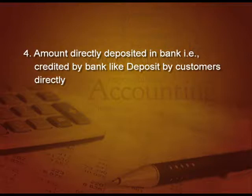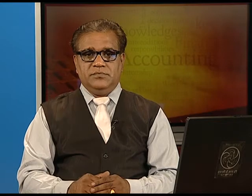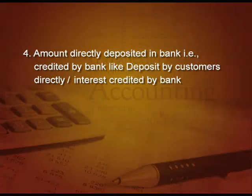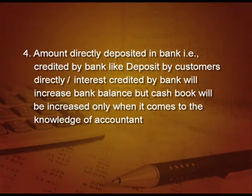Fourth point: amounts directly deposited in the bank, credited by the bank — like a direct deposit by a customer of the firm, or interest credited by the bank on a particular date. These will increase the bank balance in the pass book, but in the cash book it will be increased only when it comes to the knowledge of the accountant. Till then, the difference is there — this is also timing difference.